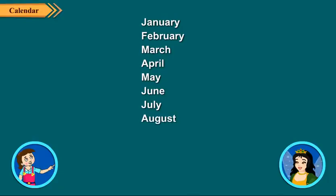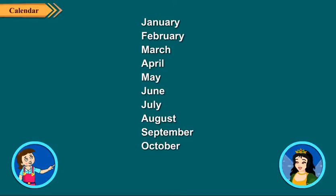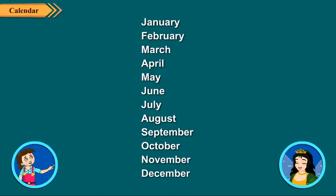August, September, October, November and December. January is the first month and December is the last month of the year.